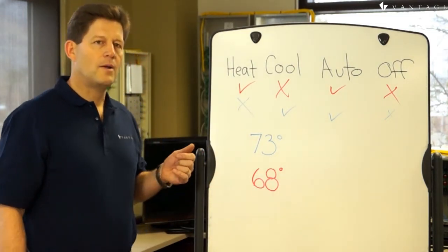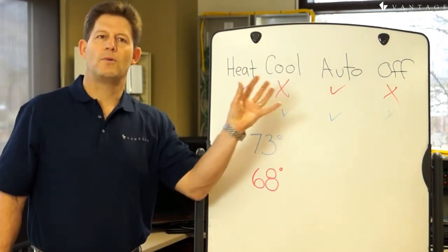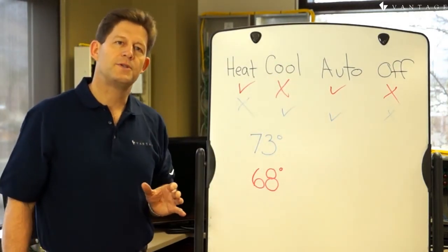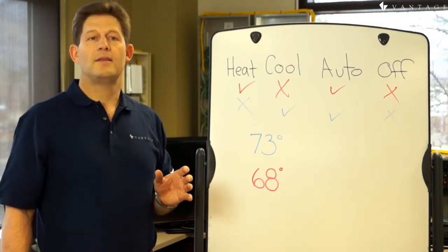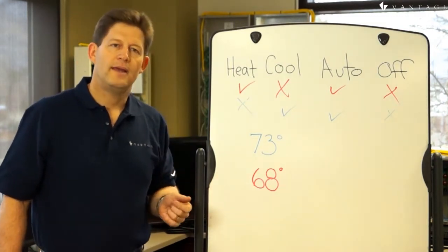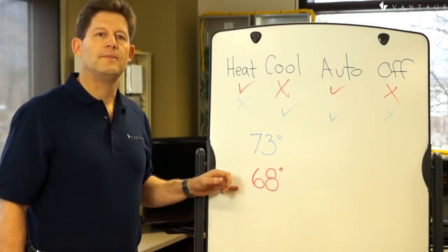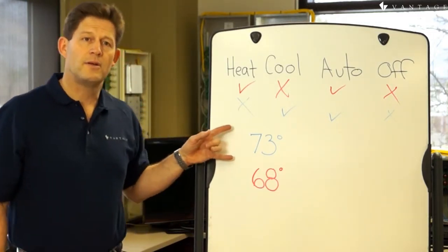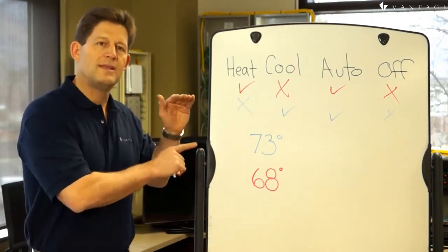Think of the auto mode as a set-it-and-forget-it mode, where we limit the range of temperatures in the conditioned space to stay within the range defined by the set points. For example, if the heat set point is at 68 and the cool set point is at 73, the system is going to work to keep the temperature within those bounds.